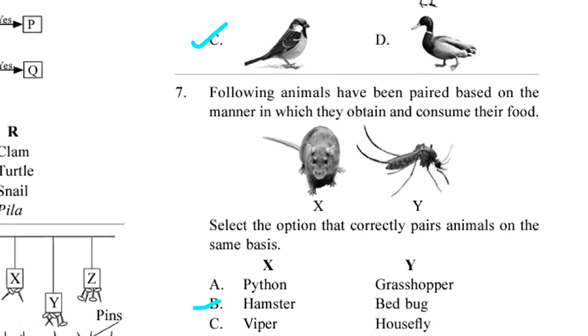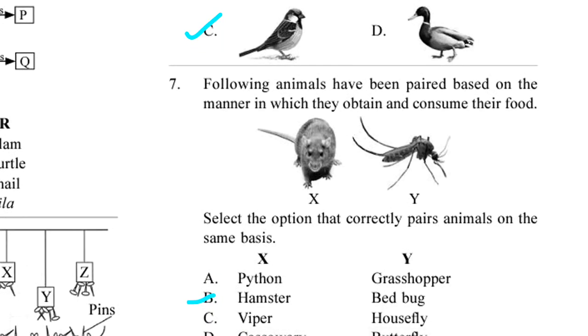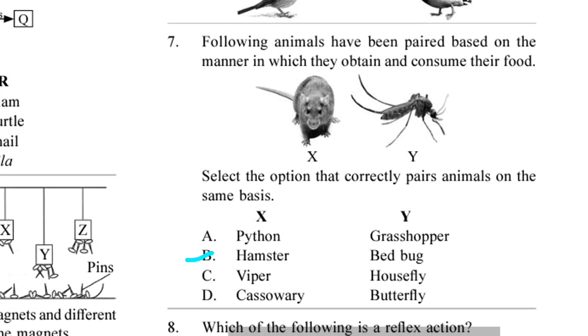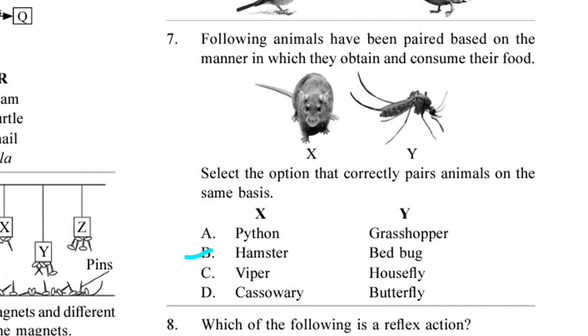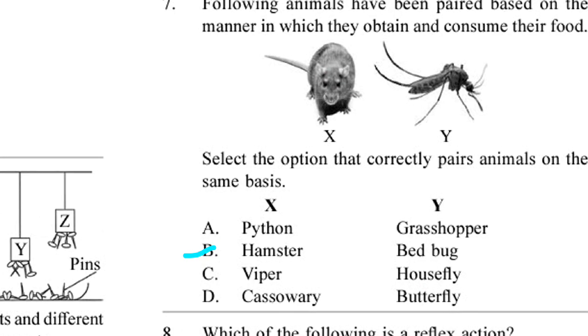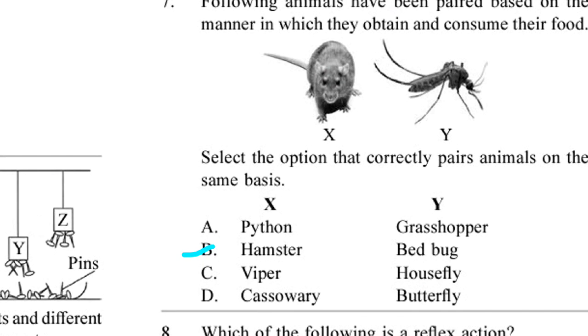Question 7. Following animals have been paired based on the manner in which they obtain and consume their food. X and Y are shown here. Select the option that correctly pairs animals on the same basis. Answer is B. X Hamster, Y Bed bug.